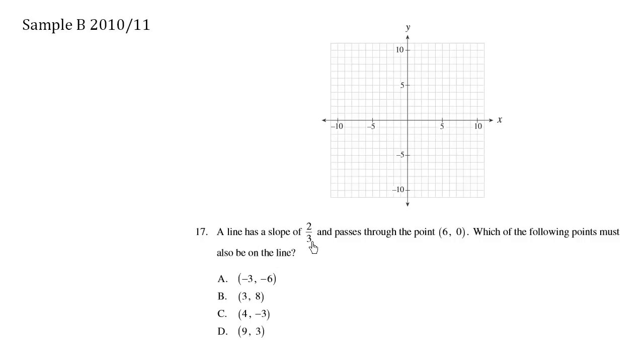A line has a slope of two-thirds and passes through the point, so we have it here. Which of the following points must also be on the line? The slope here is two-thirds, which is approximately like this. We're trying to check which points are on it.